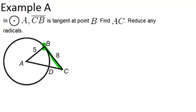Find AC, so we're trying to figure out the length of AC, reduce any radicals. Because the circle is called circle A, that means A is the center of the circle, which means that AB is a radius of the circle, which means that this angle right here has to be a right angle because it is the angle formed by a radius and a tangent line. So you have to realize that in order to be able to solve this problem.